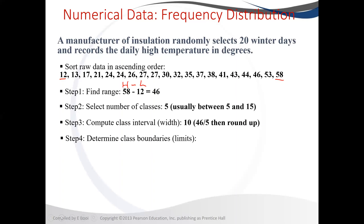The next step is to determine the class boundaries. Because we've already determined what our class interval will be, we need to look at how big each class interval is and see where we start and where it ends. Since we start with 12 and end with 58, and we want to add only 10, we can start at 10 because 12 is our lowest and we want to include it. So we start at 10, add 10 to get 20, and say anything between 10 and less than 20.